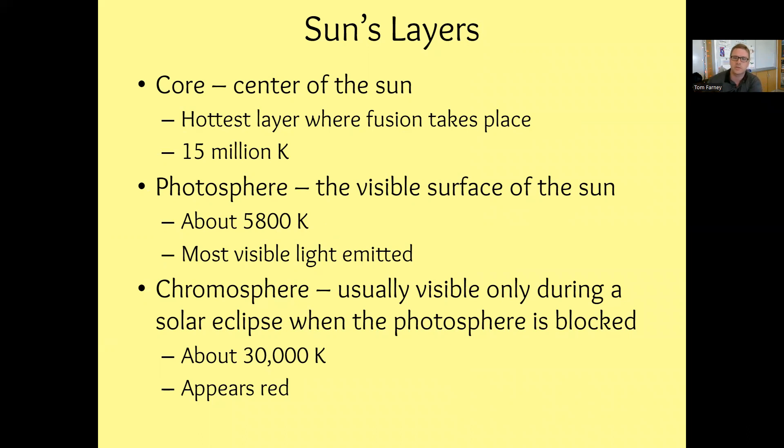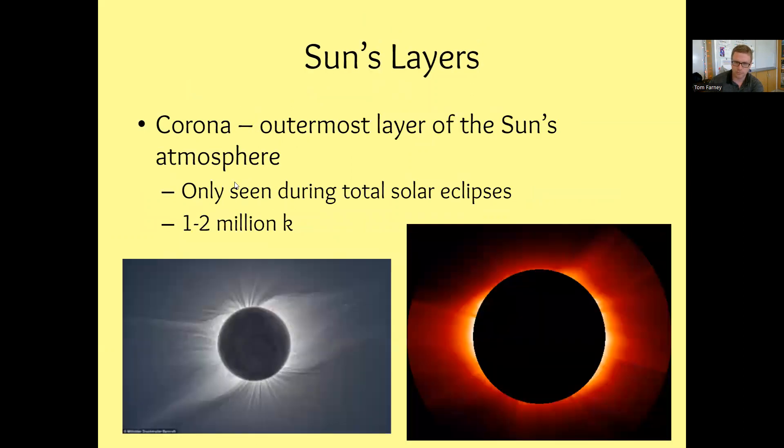So even though the core is really, really hot, the temperature we use to figure out the color comes from the photosphere. It's like the crust or the visible surface of the sun. The chromosphere is like the first layer of the atmosphere for the sun here, and it's usually only visible during a solar eclipse when the photosphere is being blocked. So it appears red during solar eclipses.